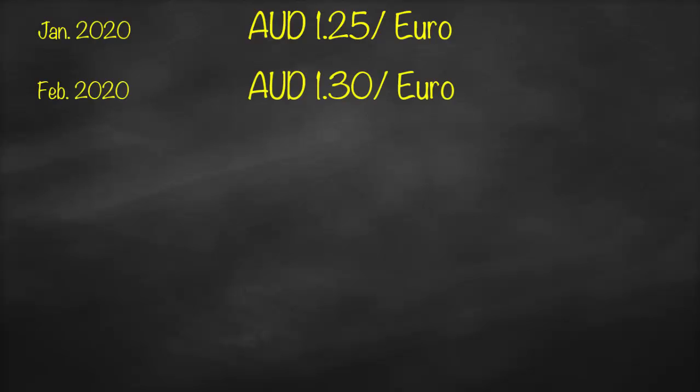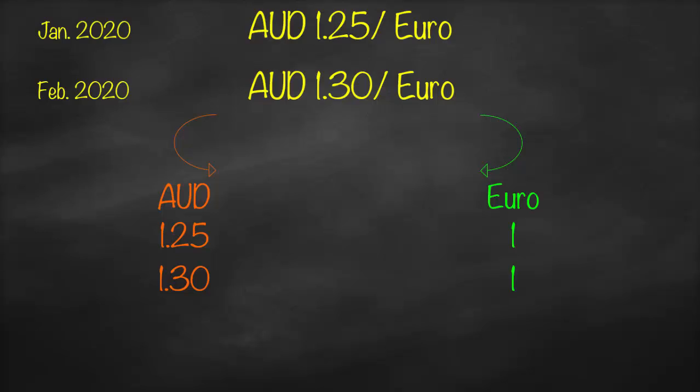Let's get another example. Here we have Australian dollar per euro, so this is an example of direct quotation — domestic currency per foreign currency — which means the foreign currency will always be one unit. In January 2020, the rate is 1.25 Australian dollar per one unit of euro. Then after one month in February 2020, our rate is 1.3 Australian dollar per one unit of euro.